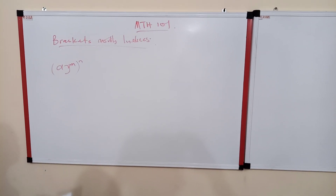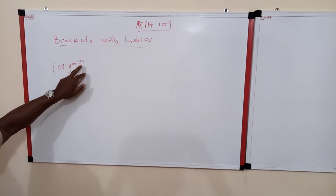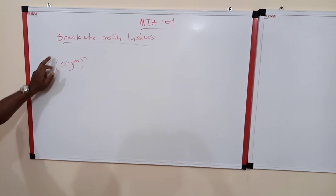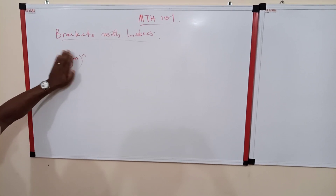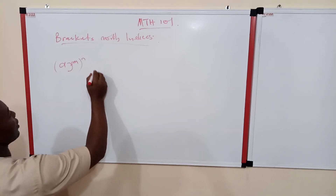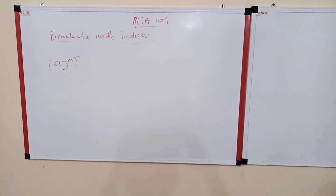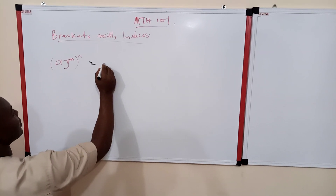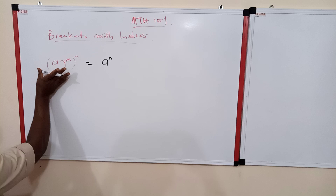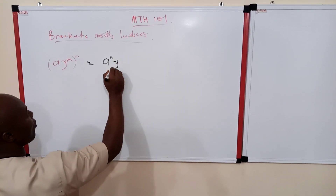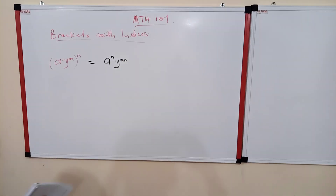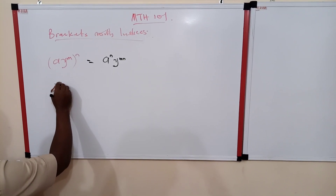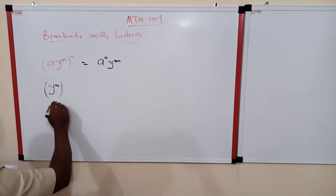In previous cases we considered similar things, but some might feel it's just to multiply — that is not the case. This bracket here is telling us that this index is affecting everything. So this expression can be rewritten as 'a' raised to power n — because this n is affecting everything inside the bracket — and y raised to power m times n. This is how it is.